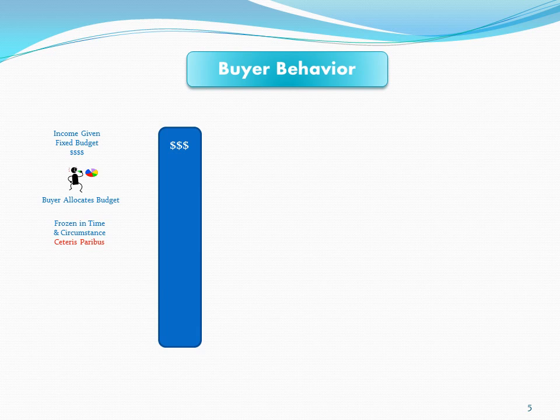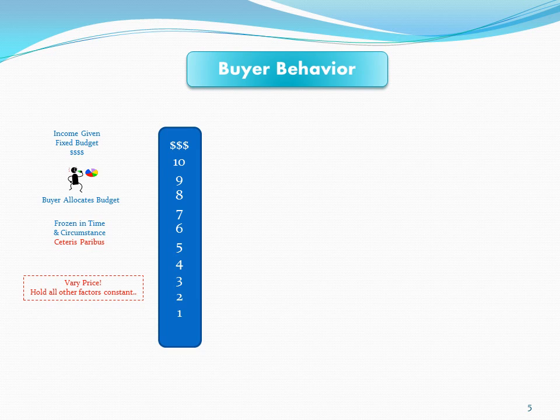I'd like you to think about buying hamburgers. Assume that you buy hamburgers and your budget is fixed where it is today, and I'm going to start raising the price of hamburgers — but not change anything else. You still only have a limited income. This is just a simulation of all given conditions being held constant today except for the price. At a low price, you may want, say, five hamburgers.